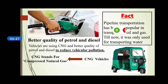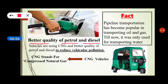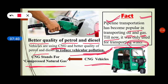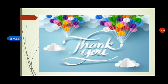Better quality petrol and diesel should be used to reduce chemical pollution. CNG, which stands for Compressed Natural Gas, is also being promoted. Pipeline transportation has become popular for transporting oil and gas. Previously, pipelines were used only for water transport. I hope you understood this chapter very well. Thank you, and have a nice day.